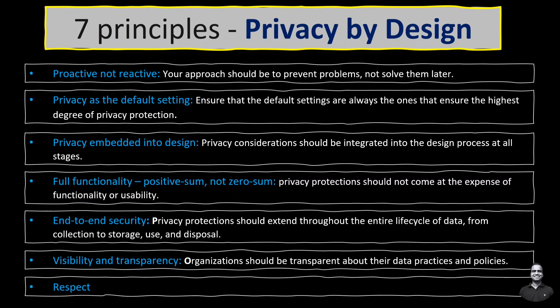The seventh principle is respect for user privacy — privacy by design should prioritize the interests and preferences of individual users. Users are provided with easy-to-use tools to control their personal information, preferences, and consents.